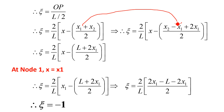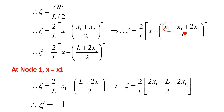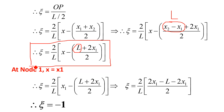After rearrangement, ξ = (2X − X1 − X2) / 2 divided by (L/2), which simplifies to ξ = (2X − X1 − X2 + L) / 2L, or equivalently using X2 − X1 = L: ξ = (L + 2X1 − 2X) / (2L)... ultimately giving the final expression for the natural coordinate ξ of any point P on the bar element.